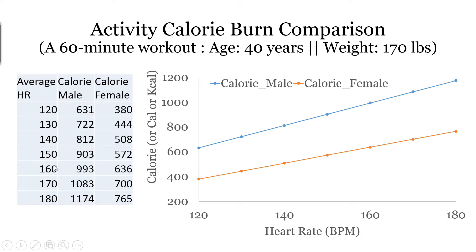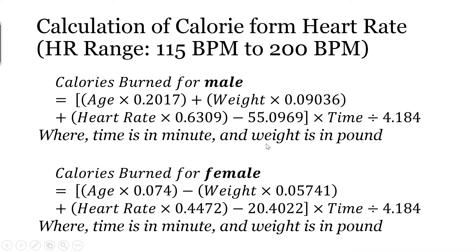At 150 beats per minute, for this 40-year-old person, if it's a male he's going to burn about 900 calories; if it's a female she's going to burn about 572. I'll post both of these formulas on openeducator.com so you can calculate calorie consumption for any particular activity.